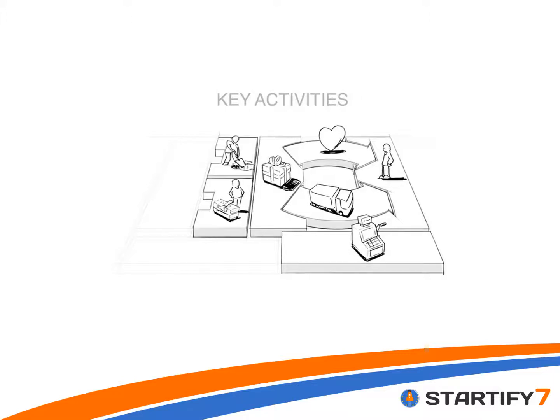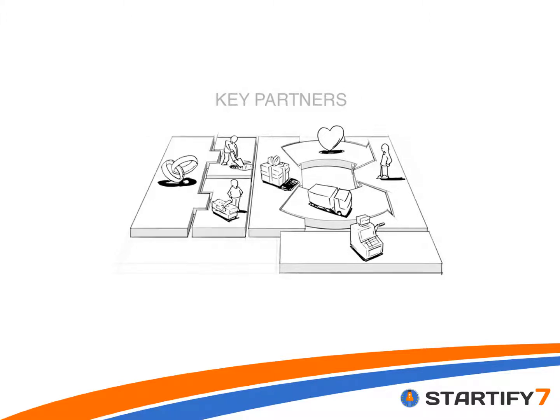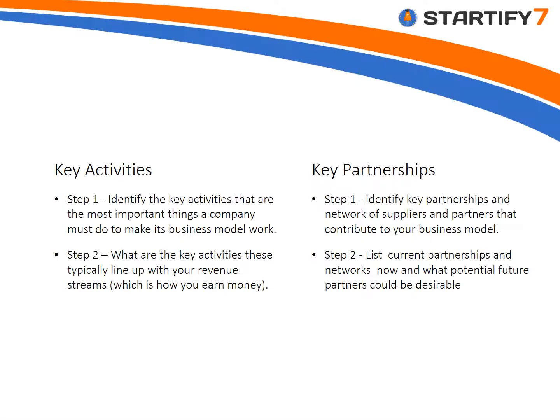The next two components look at the key activities the business is going to undertake and also the key partners. When thinking about key activities, it's important to consider what the company is actually doing to make the business model work. Often key activities are closely aligned with the revenue streams — that is, what you're doing to actually earn the money. In an increasingly connected digital world, business models rely on networks of suppliers and partners. So think about the partnerships you have or will require to make the business model more effective, and also how you can scale it in the future.